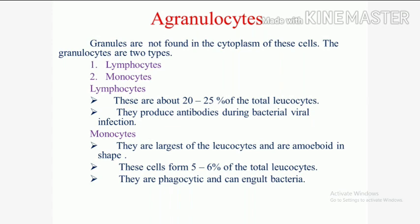Lymphocytes are about 20 to 25% of total leukocytes. They produce antibodies during bacterial and viral infections. Lymphocytes are divided into two: small lymphocytes and large lymphocytes.